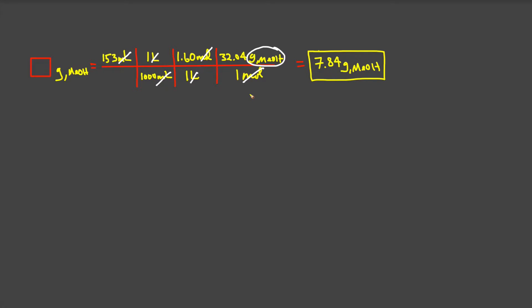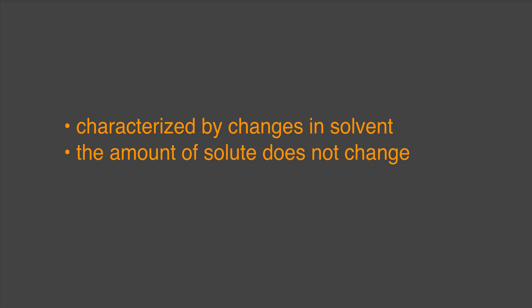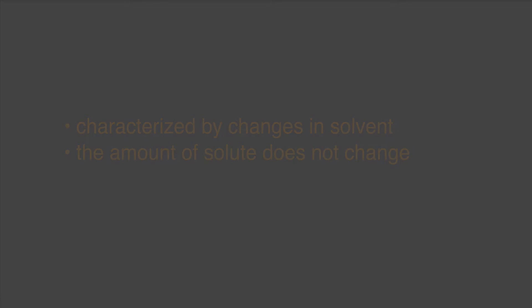Notice that in neither one of these cases did you need to use density. Density in this particular case was extraneous data. The third type of problem that we want to consider are concentration dilution problems. Remember, these types of problems are characterized by the fact that it is only the amount of solvent that changes. The amount of solute remains constant. As a result, the equation CV equals C'V' will always work. The concentration times the volume before a dilution or concentration is going to be equal to the final concentration times the final volume after the material is concentrated or diluted.